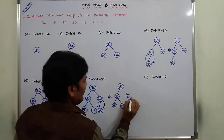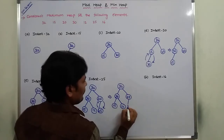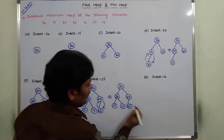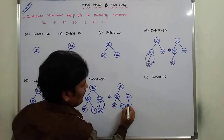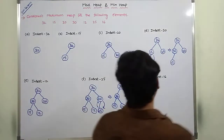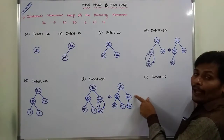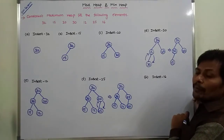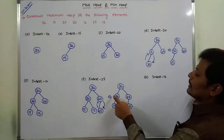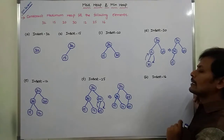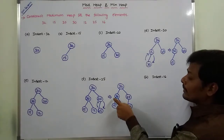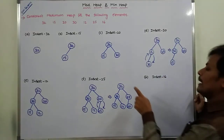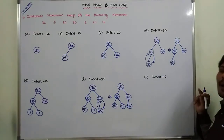After swapping, we get 25 in place of 20 and 20 as the child. Now, 20's parent is 25, and 25 is greater than 20 — it satisfies the maximum heap property. Also, 30 and 25 have parent 32. 32 is greater than 30 and 32 is greater than 25. Hence, it satisfies the maximum heap property.